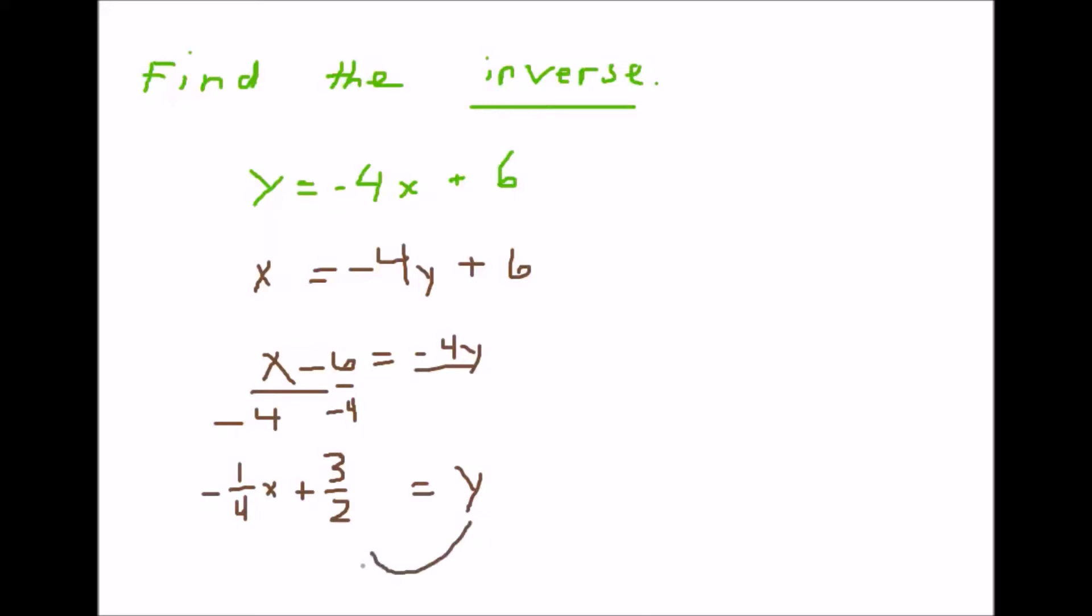If you want to be correct you could write this over here and write y equals negative 1 fourth x plus 3 halves. That's the inverse, and the way we write that is y to the first power, and we call that y prime. That's how we show it's the inverse, so this is y and this is y prime or the inverse.